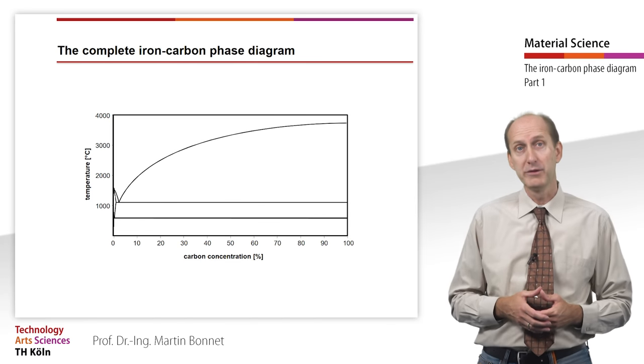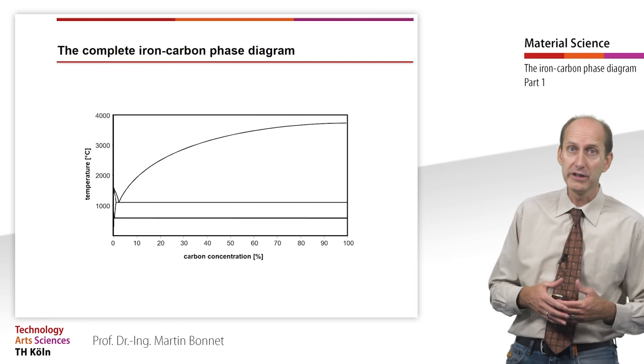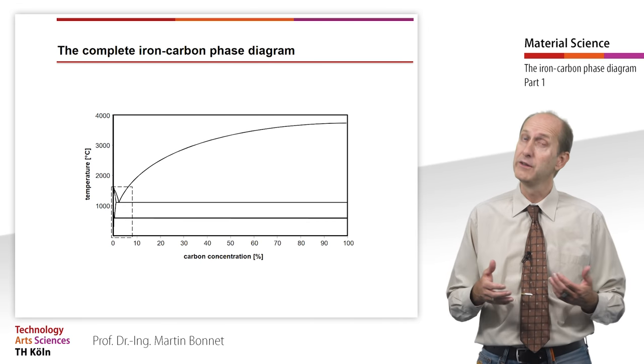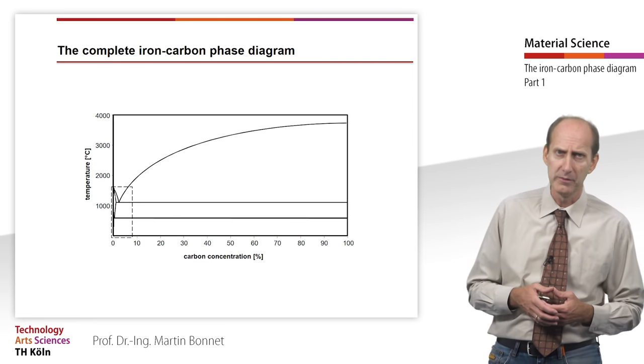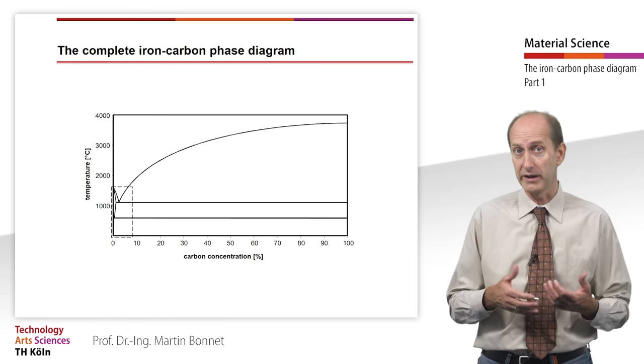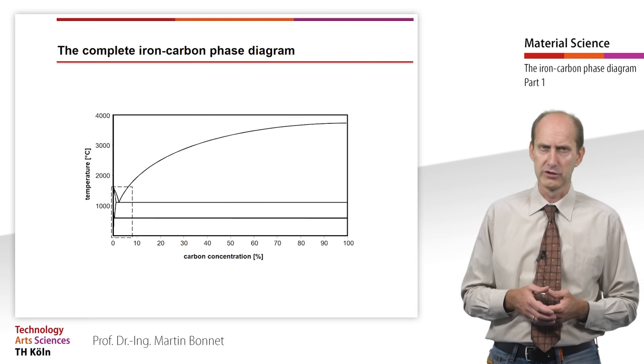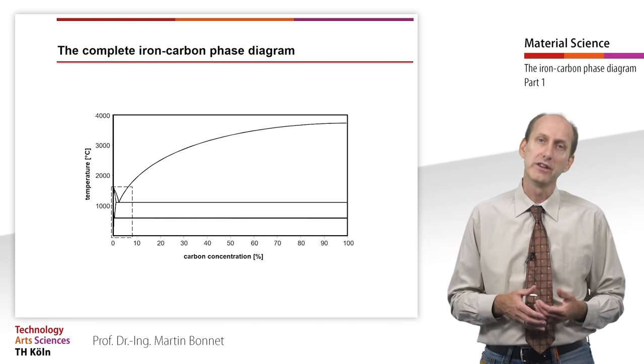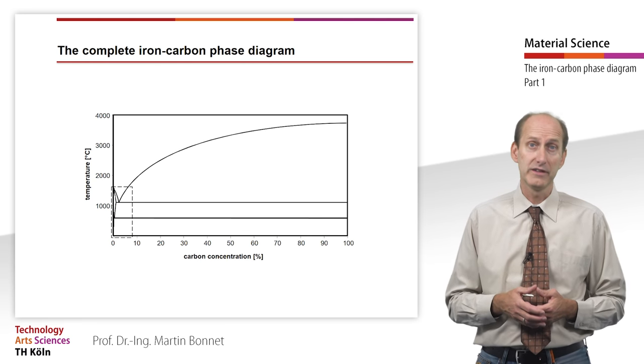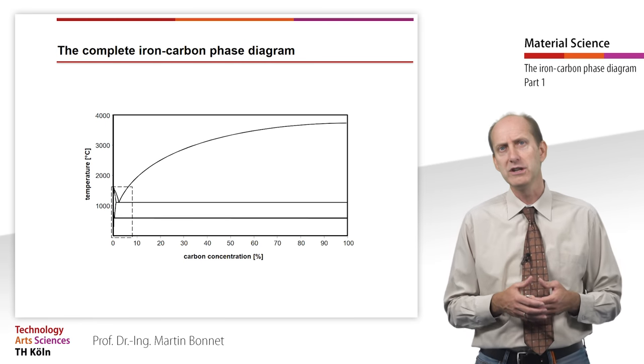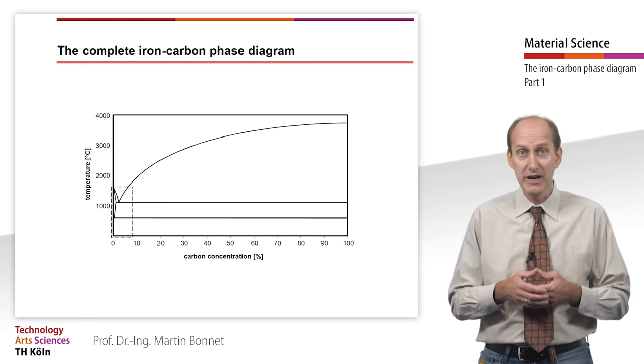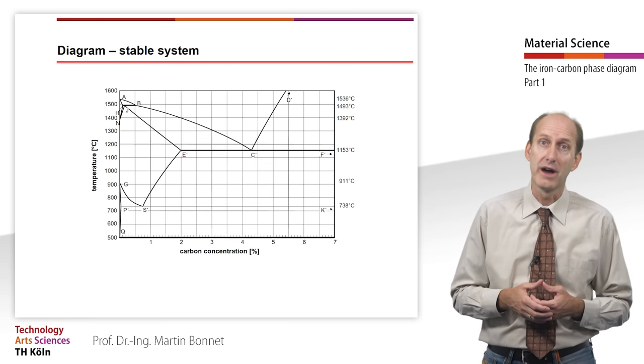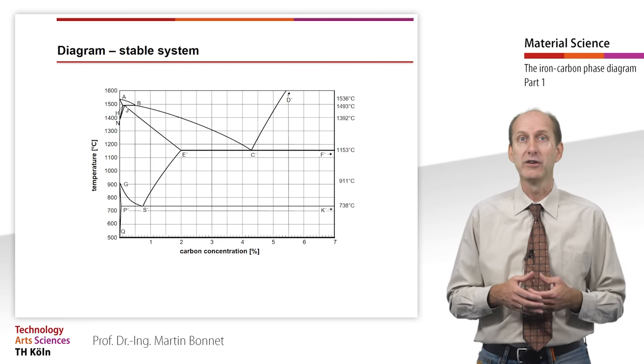The complete iron-carbon phase diagram can be seen here. It shows the phase boundaries for all concentrations between 0 and 100% carbon content at any given temperature. At high carbon concentrations, however, the material mostly consists of graphite and is unsuitable as a constructional material. Interesting from a technical point of view are only carbon concentrations lower than 6.67%. This is why the area enclosed by the dashed lines is usually shown in detail.